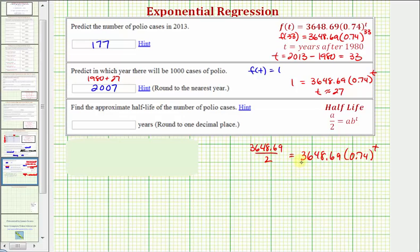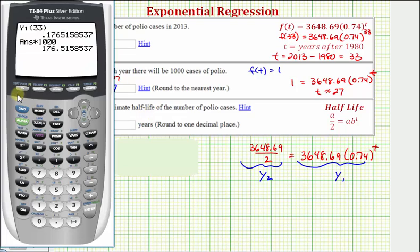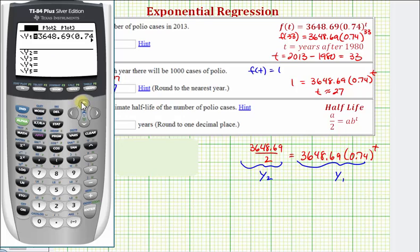So again, we'll solve this graphically. We already have the right side here in y1, since that's our model. So we'll enter this constant into y2 and determine the point of intersection. Though we are going to have to adjust the window again. So let's go ahead and press y equals. Let's turn our scattergram off, since we're done with that. So I'm going to press up, enter, back down. Now it's off. Press enter. And in y2, we're going to have 3,648.69 divided by 2. Enter.